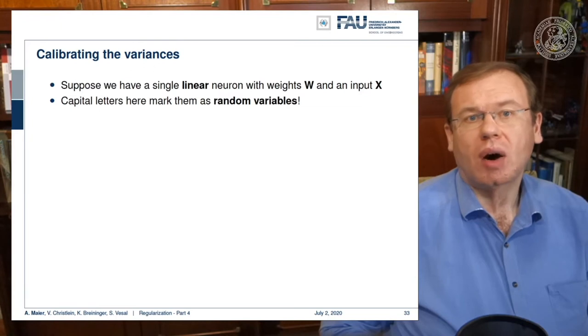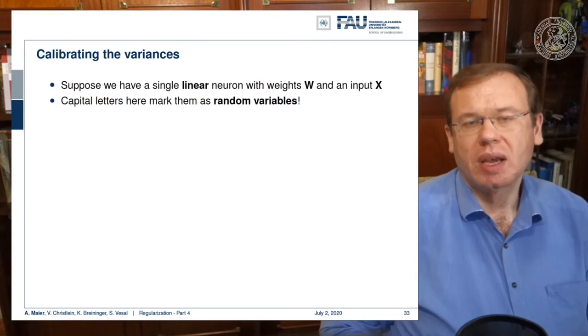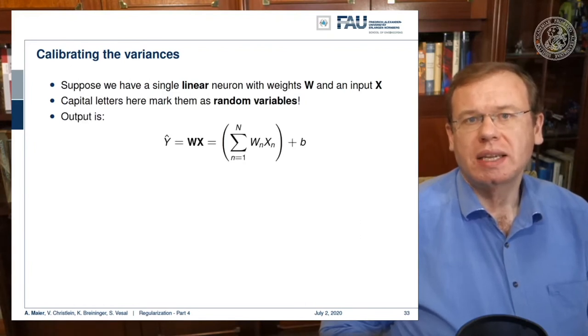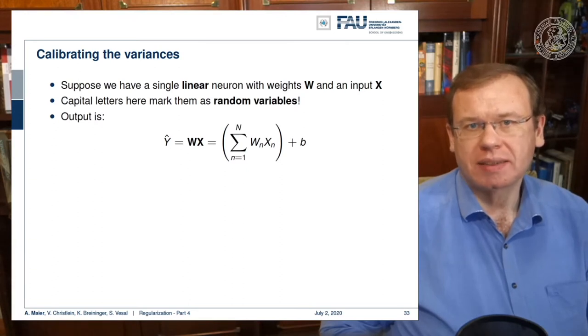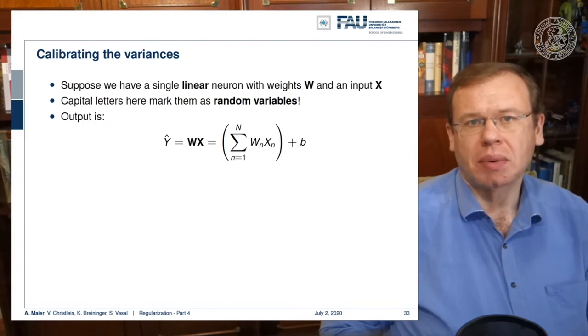Now, you may wonder how we can calibrate those variances. Let's suppose we have a single linear neuron with weights W and input X. Remember, the capital letters here mark them as random variables. Then you can see that the output is W times X. So this is a linear combination of the respective inputs plus some bias.